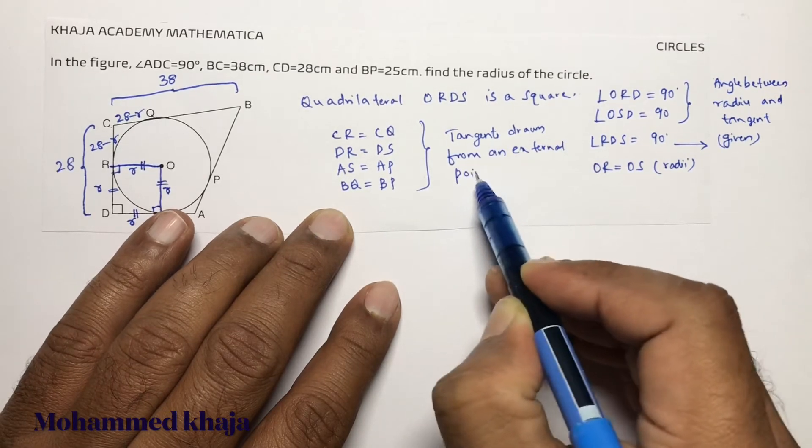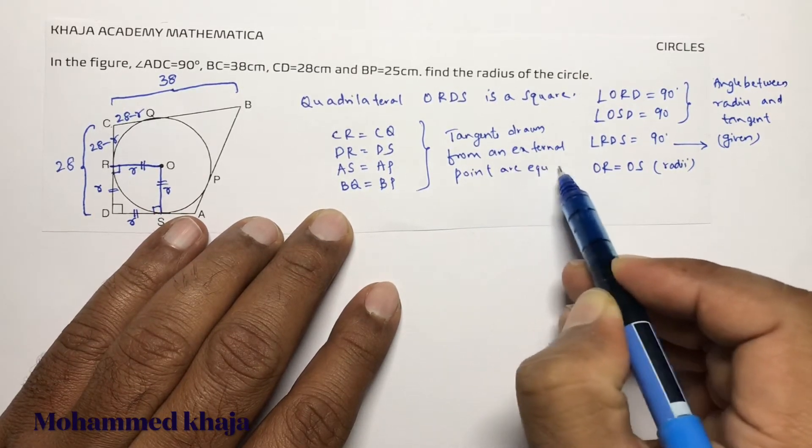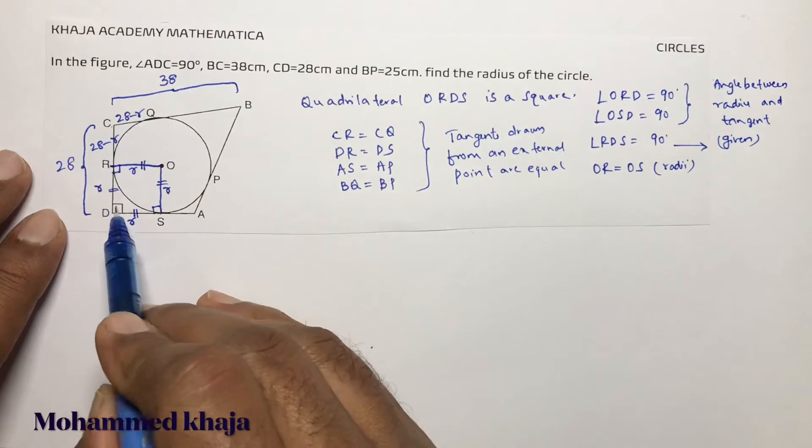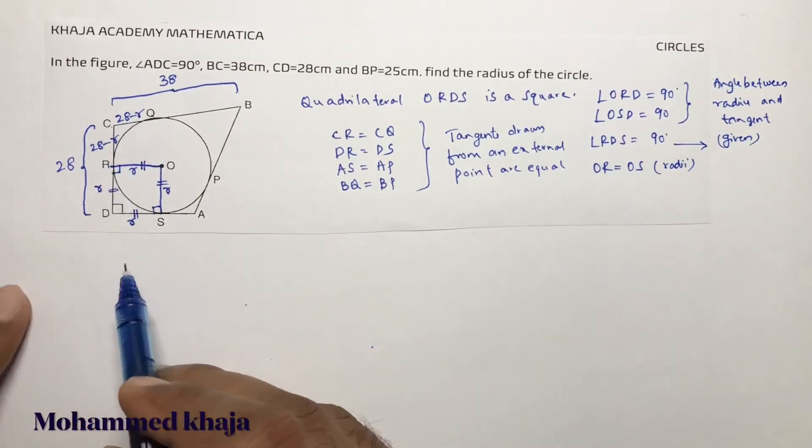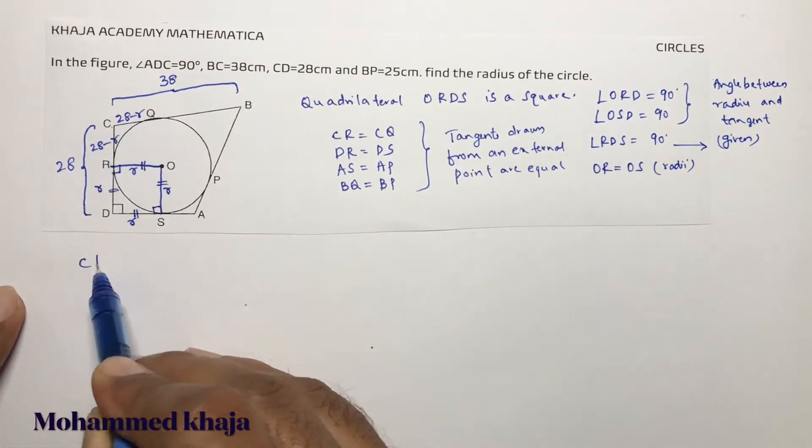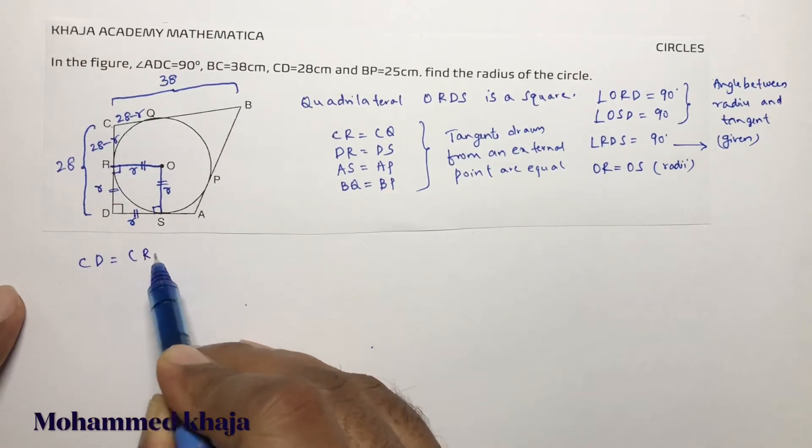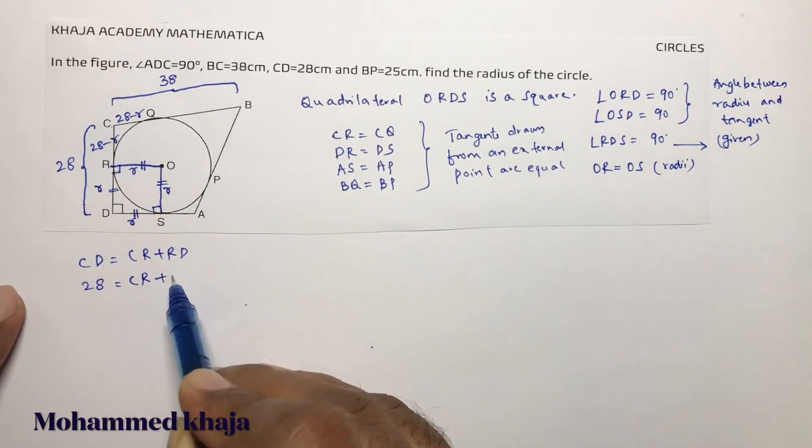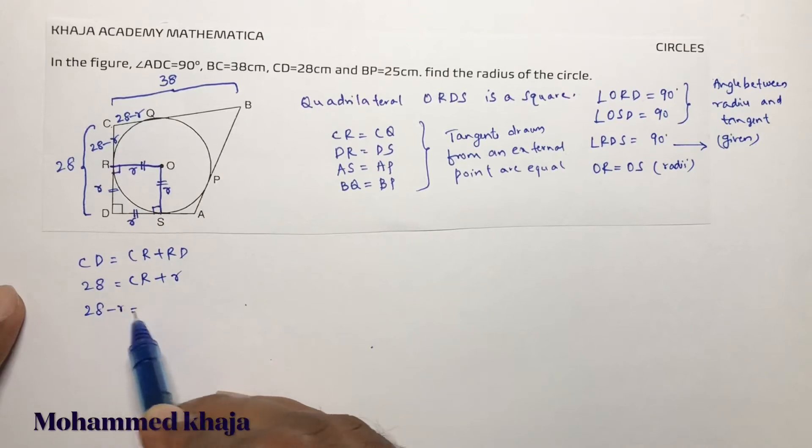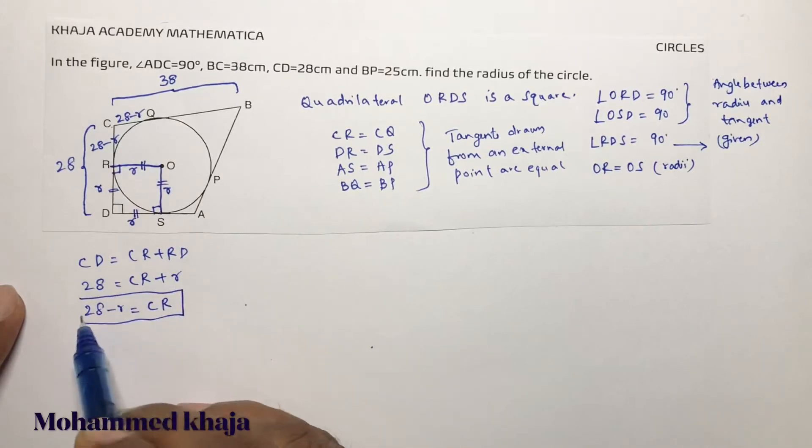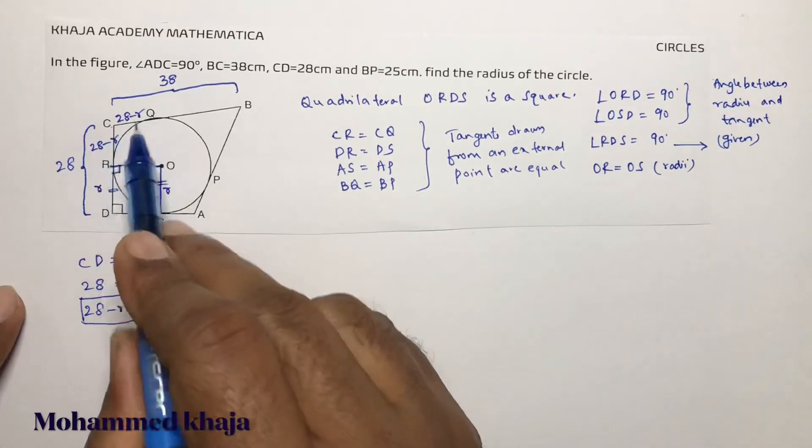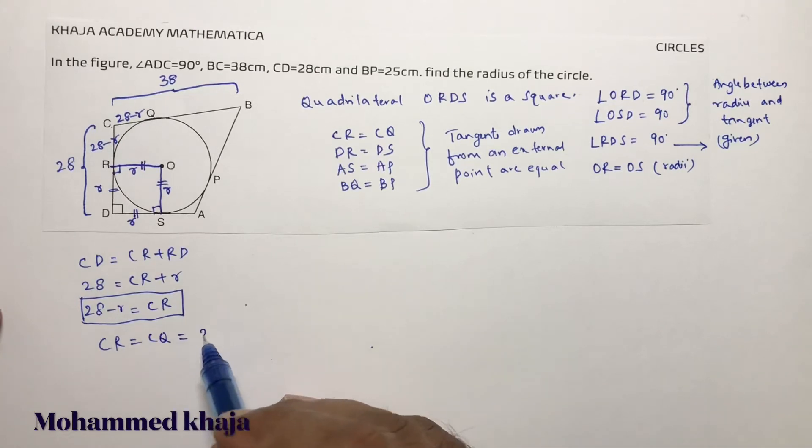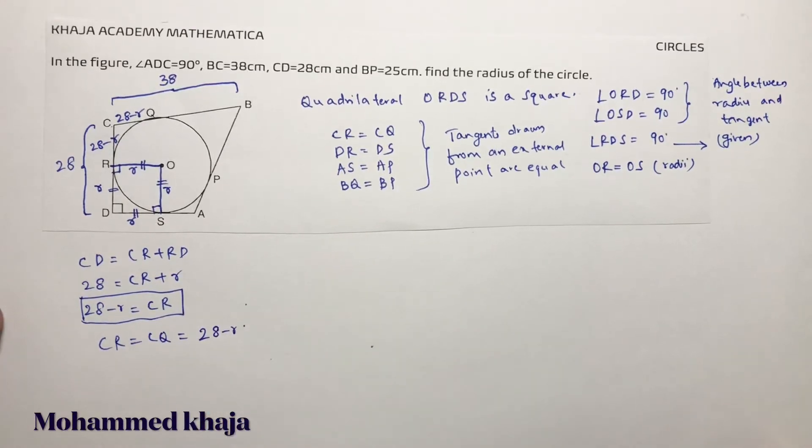Now see here, RD I consider as R. CR I got 28 minus R. If you want to check: CD equals CR plus RD. CD is 28, CR is 28 minus R, RD value is R. So 28 minus R plus R. Now CR equals CQ because tangents drawn from an external point, so CQ is also 28 minus R.